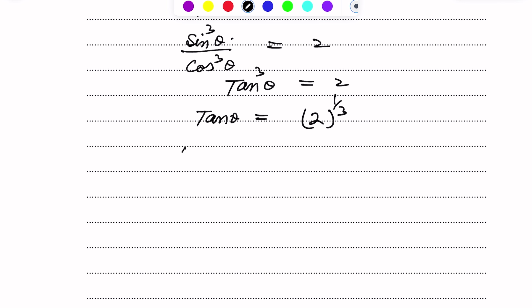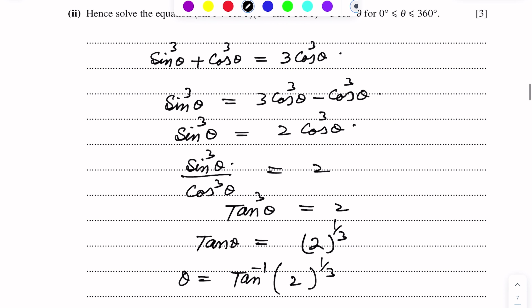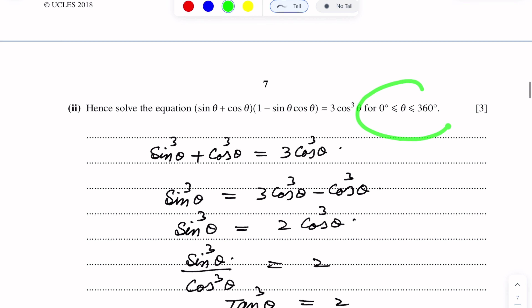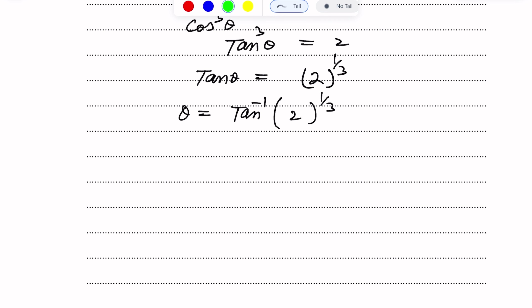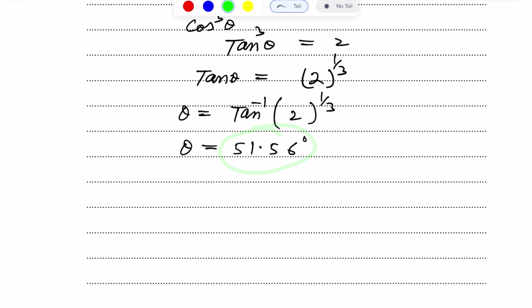To find the basic angle, theta equals tan inverse of 2 to the power one-third. Make sure your calculator is in degree mode since the interval is 0 to 360 degrees. The basic angle is theta equals 51.56 degrees. The basic angle is always positive and always acute.